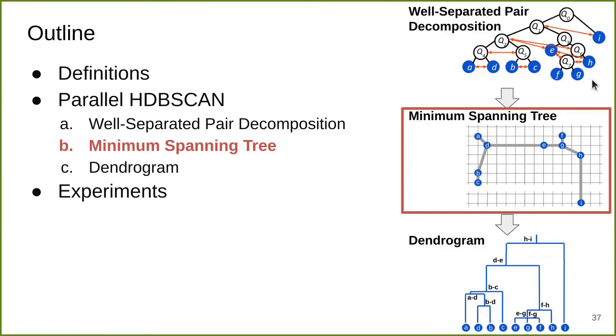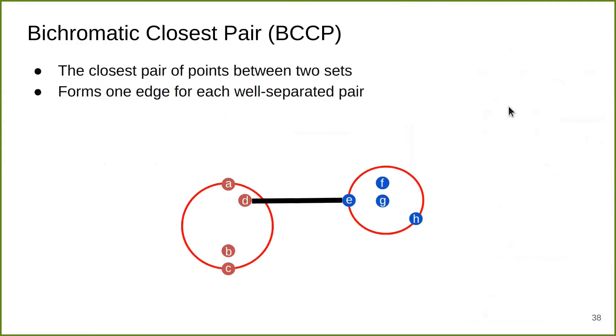Now I have explained the first part. We have the well-separated pair decomposition. The next step is to compute MST. You might be wondering with this WSPD, how do we convert it into a graph? We use the bichromatic closest pair. Given a well-separated pair, we simply take the closest pair of points and add one edge between them. So in this way, we can convert each well-separated pair into an edge.